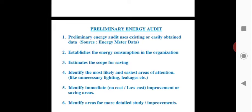He will identify the easiest area at which we can save energy in the laboratory — for example, by turning off fans, replacing older fans, or replacing incandescent lamps with CFL or LEDs. The auditor identifies the most likely and easiest area of attention. Stress on the word easiest — it doesn't go far to check in detail; you just identify the area and find the easiest way to improve.